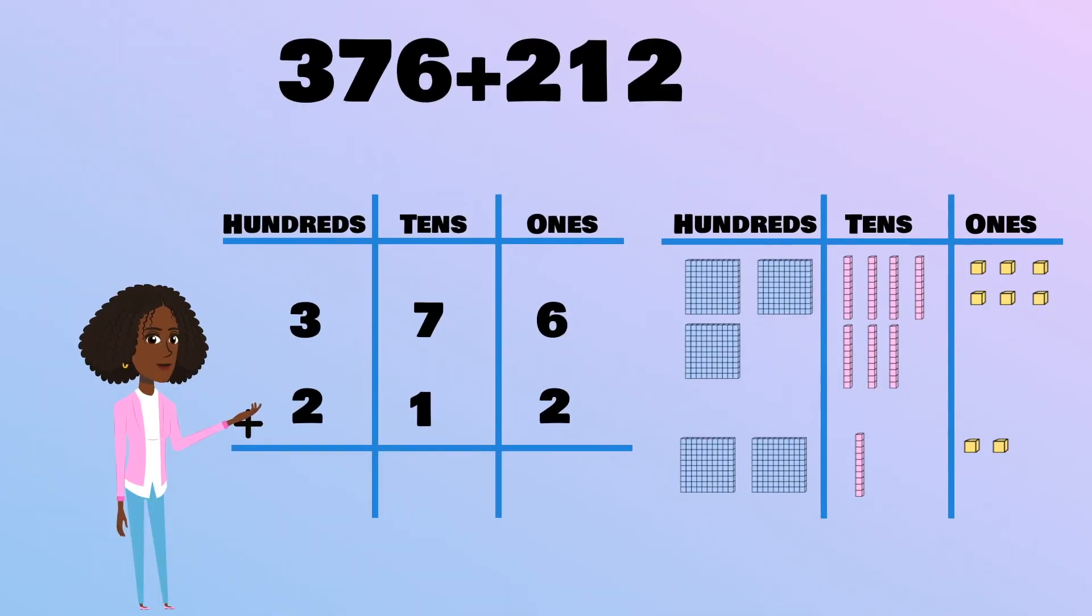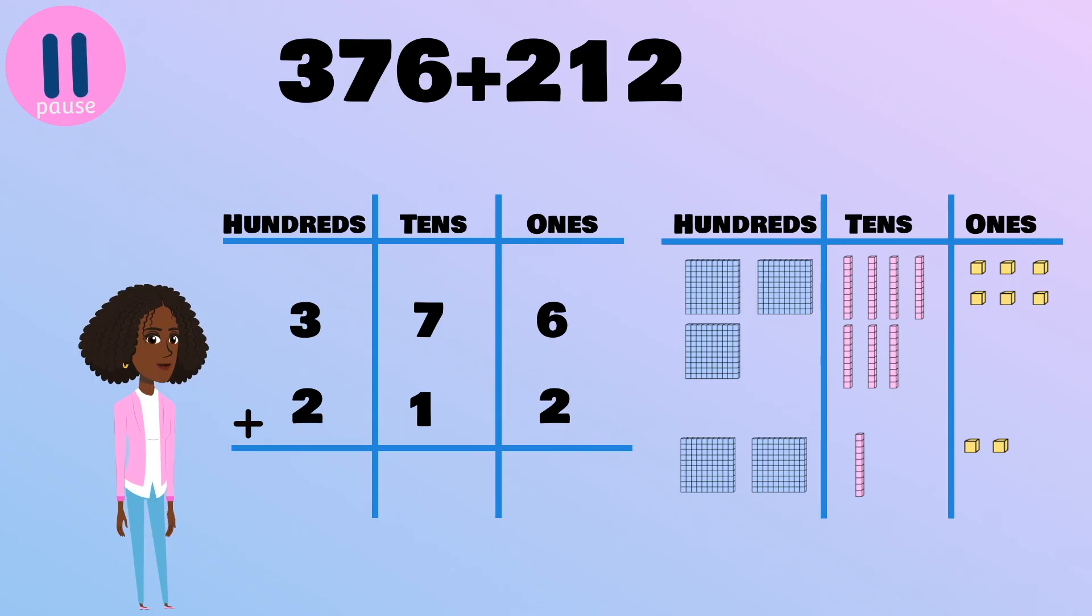Here's your equation. 376 plus 212. Take your time. Think it through. And be sure to use those base 10 blocks to help you add. When you're ready, press pause to solve the problem. Once you've found your answer, press play to check your work. Good luck!